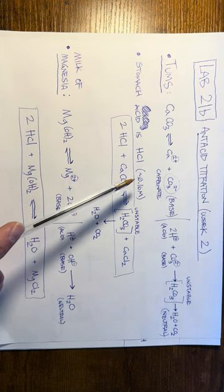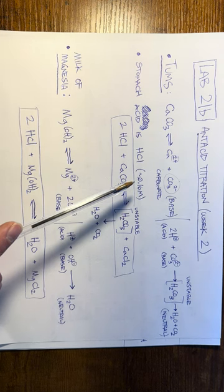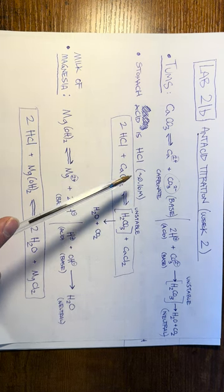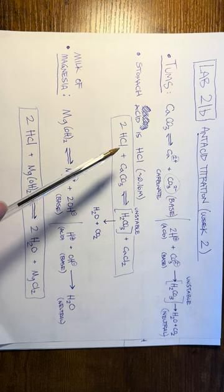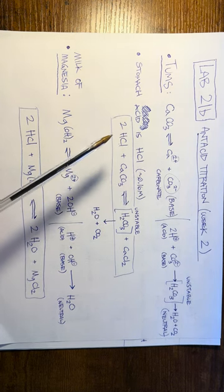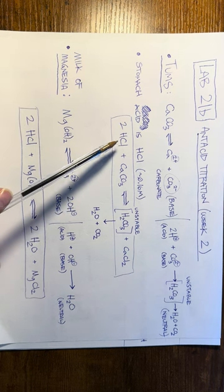If you've ever taken Tums, you may have noticed it made you burp afterwards — that's because you're generating CO₂ gas inside your stomach. Stomach acid is made of hydrochloric acid, HCl. The approximate molarity of stomach acid is 0.16 molar, though that changes based on how recently you've eaten and individual genetics.